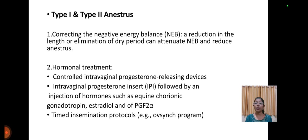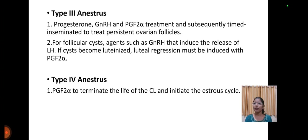For Type 1 and Type 2 anestrus treatment: correcting the negative energy balance is important. A reduction in the length or elimination of the dry period can help attenuate negative energy balance and reduce anestrus. Hormonal treatment includes controlled intravaginal progesterone-releasing devices, intravaginal progesterone insert followed by injection of hormones such as equine chorionic gonadotropin, estradiol and PGF2-alpha, and a timed insemination protocol.